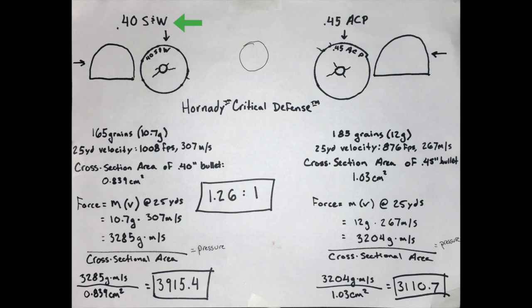I have here a comparison of the 40 Smith & Wesson and the 45 ACP, the two rounds I'm considering. For this discussion, I'm using info from Hornady's website on their Critical Defense round.